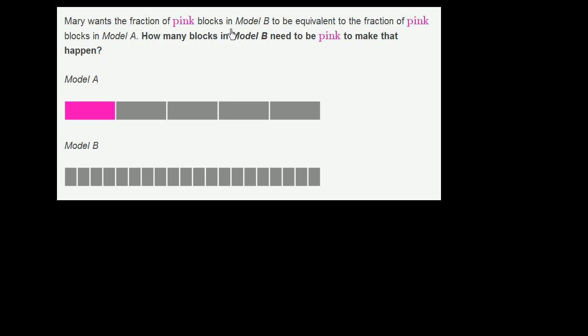Mary wants the fraction of pink blocks in Model B to be equivalent to the fraction of pink blocks in Model A. How many blocks in Model B need to be pink in order to make that happen?